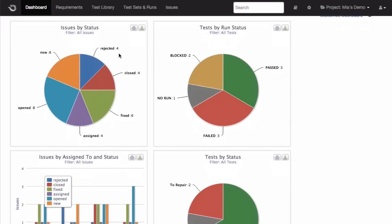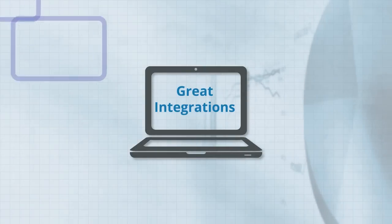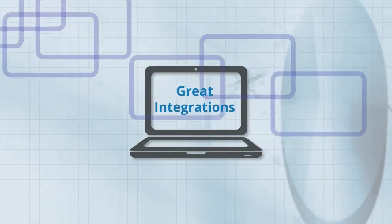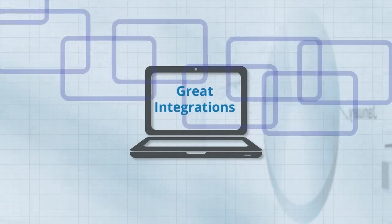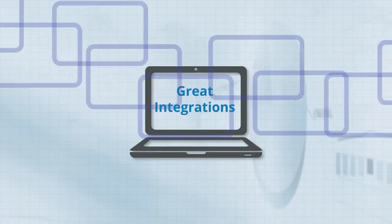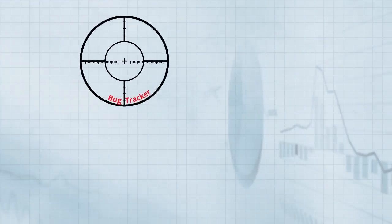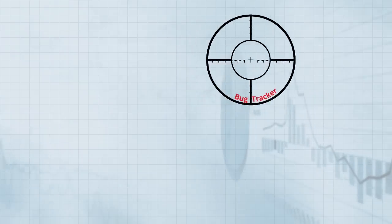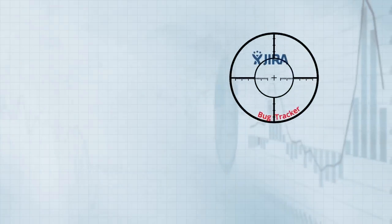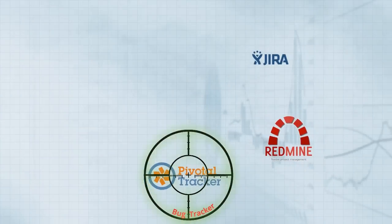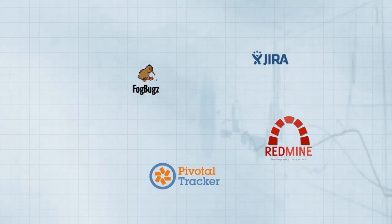In addition to all this, PractiTest has great integrations with many external systems that your company may already be using, starting from two-way integrations with bug trackers such as Jira, Redmine, Pivotal Tracker, and more.